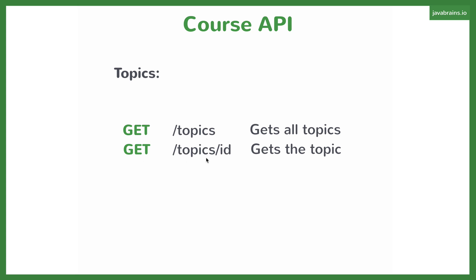We can also have a GET request to an individual element, which is basically /topics/{id}, and it would get that particular element alone. So let's say you have a topic called 'spring' and the ID of that topic is 'spring'. You can make a GET request to /topics/spring and it's going to return only the topic related to that particular element — only that element will be returned as a response.